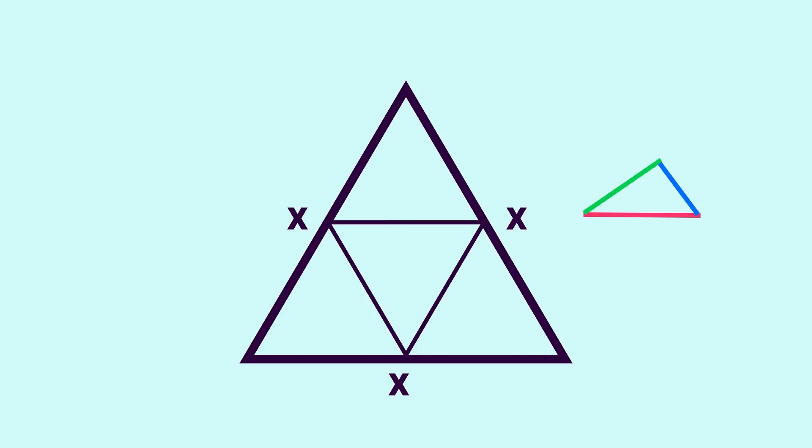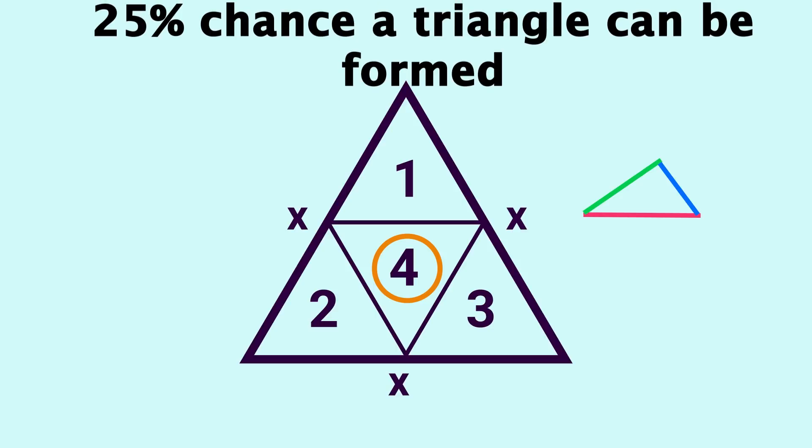So of the four regions we see here, all equally likely to be the point representation of the two cuts, only one of them yields lengths that can make a triangle. So the answer to our question is 25%.